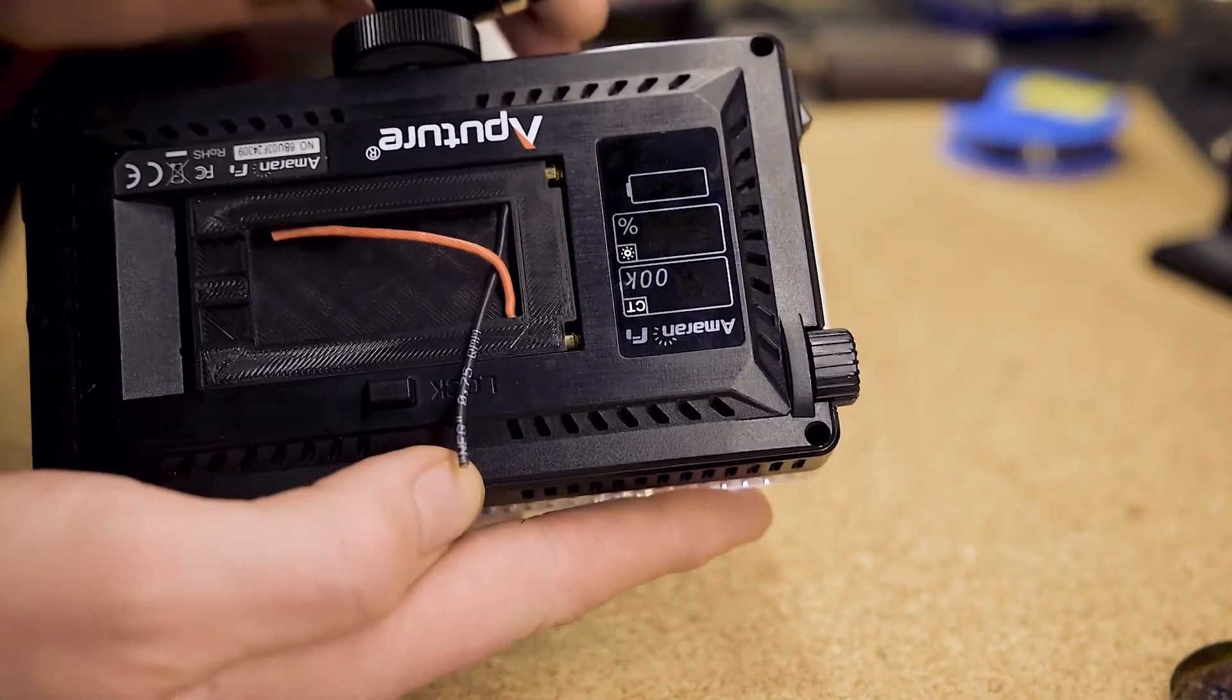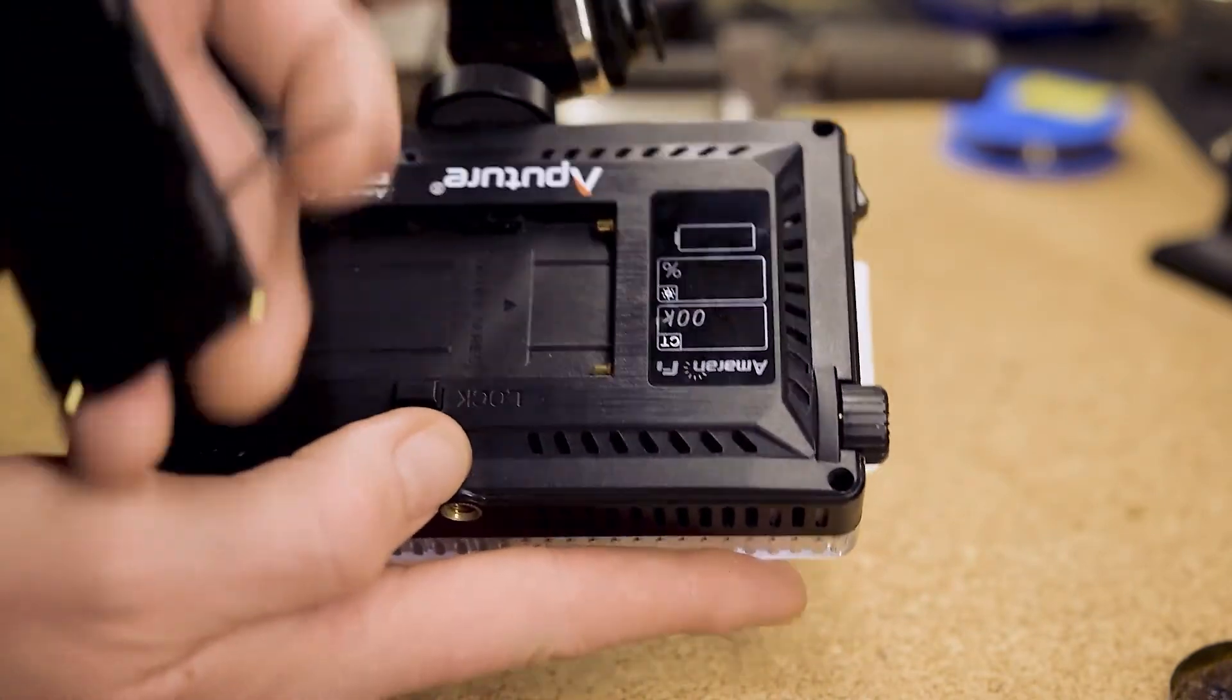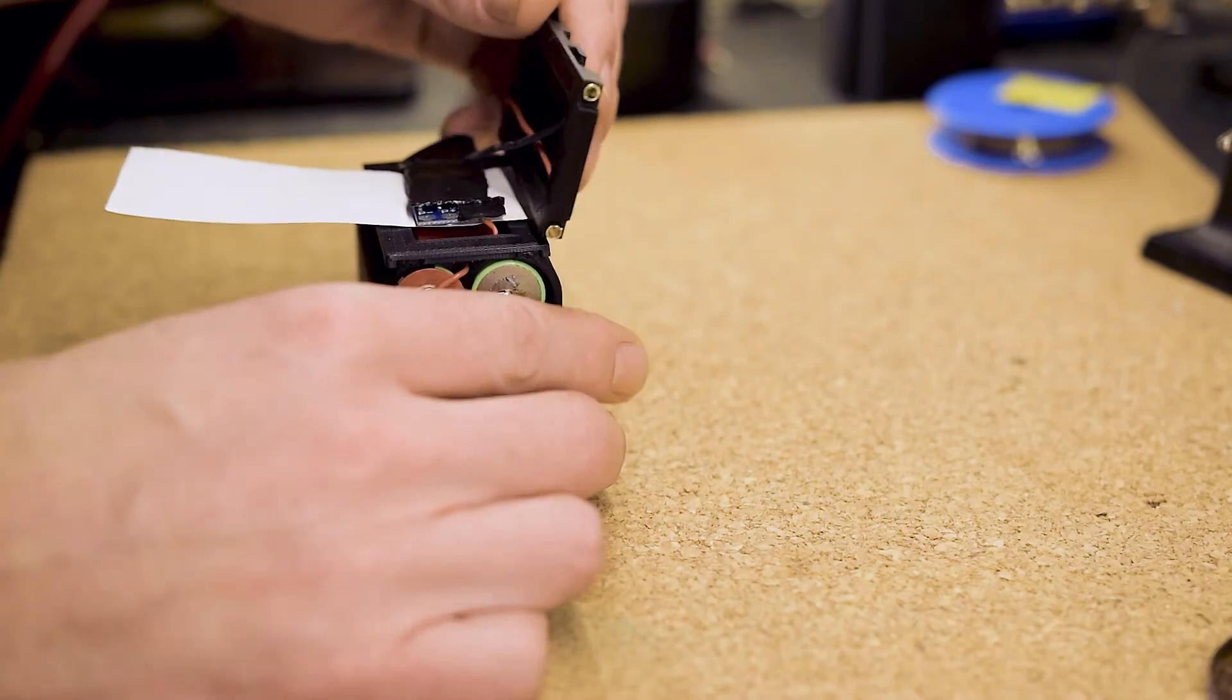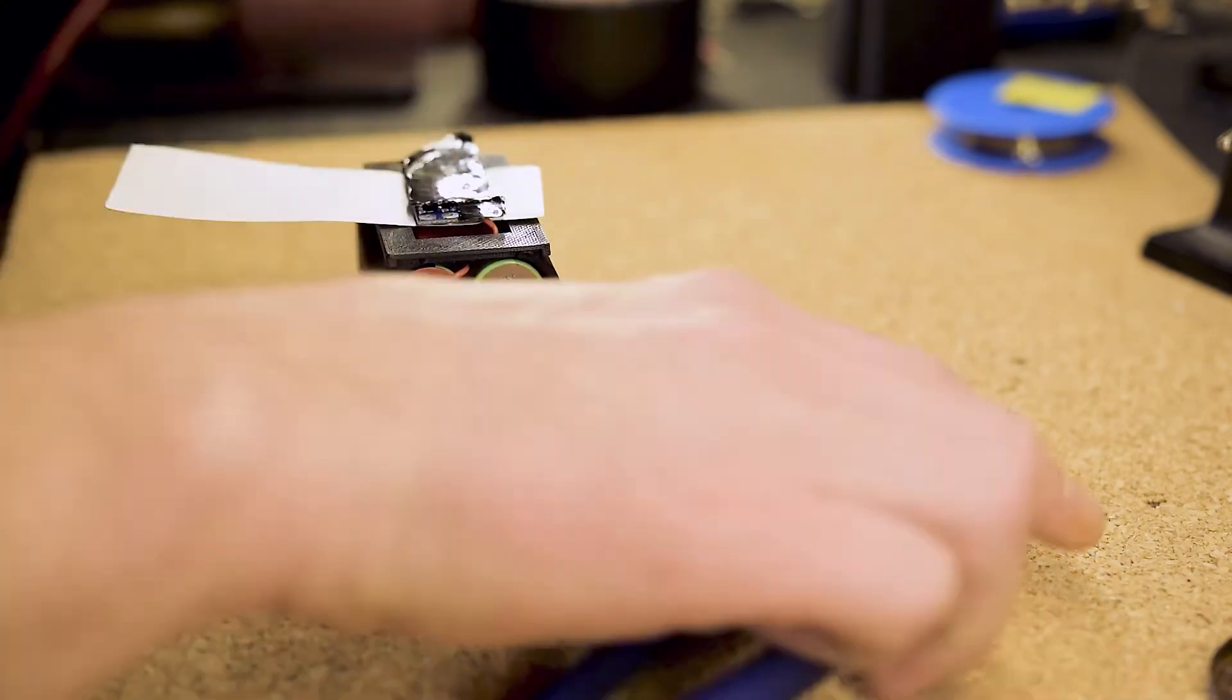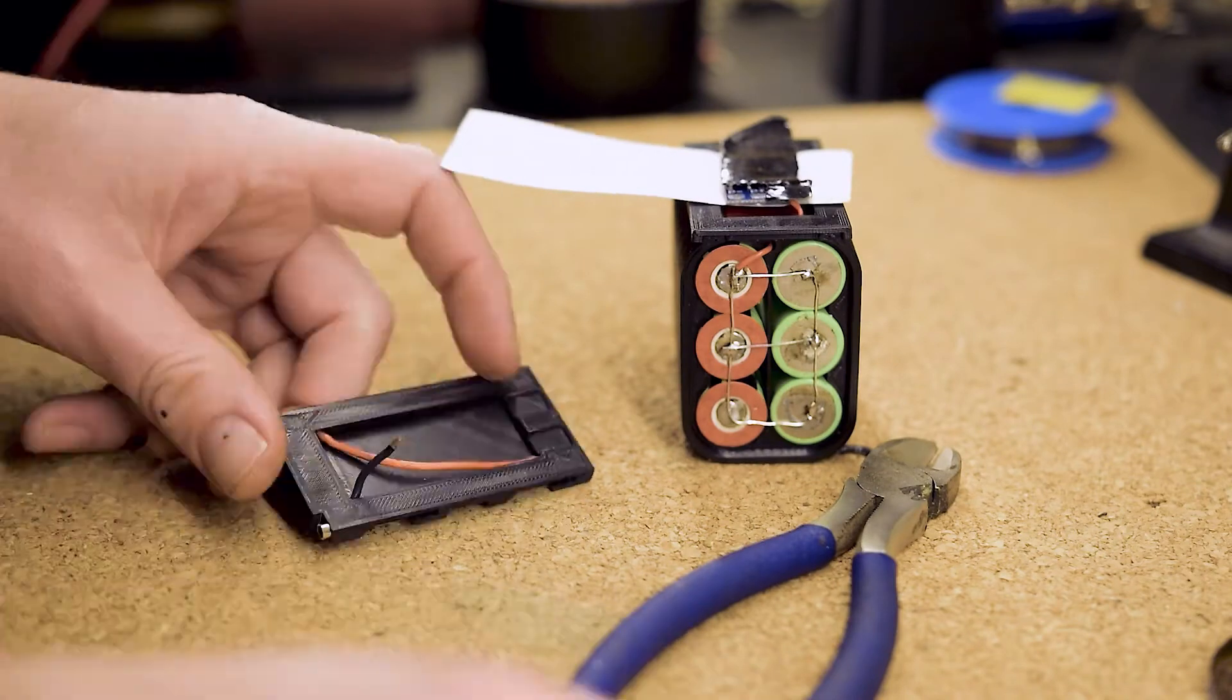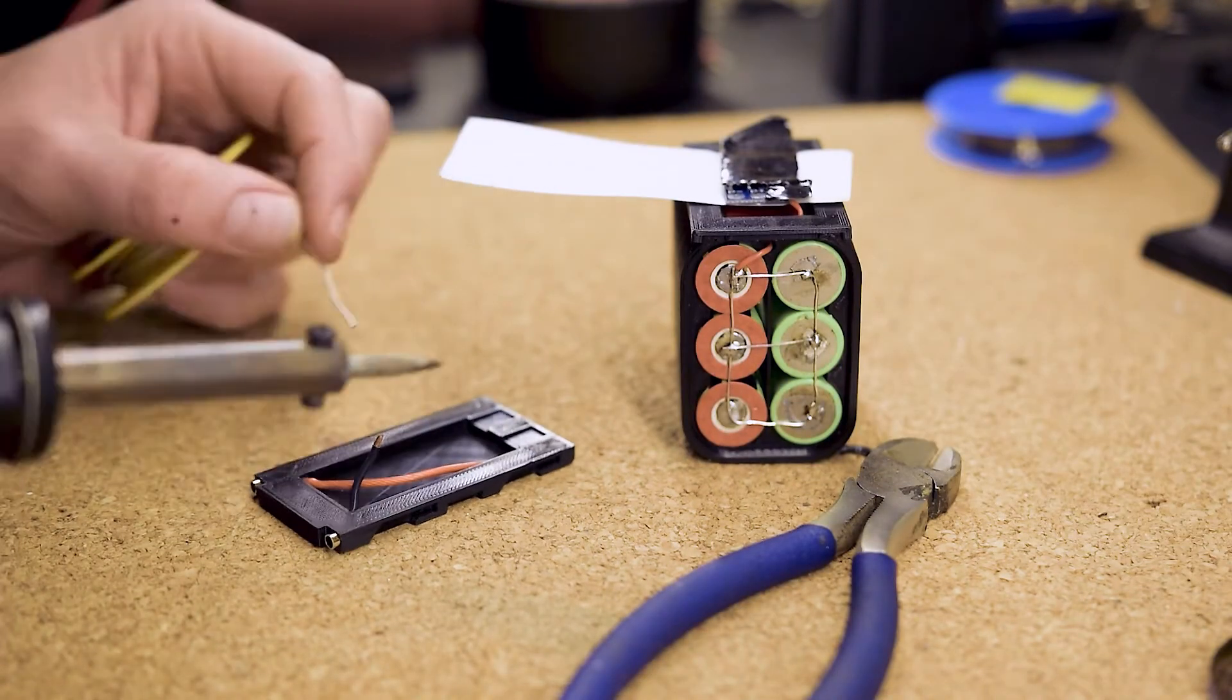If you see that everything fits, we can proceed with the next steps. At this point, we can solder the cables that wire the bullet connectors to the power outs of the BMS. Again, cover the neighboring components with gaffer tape.